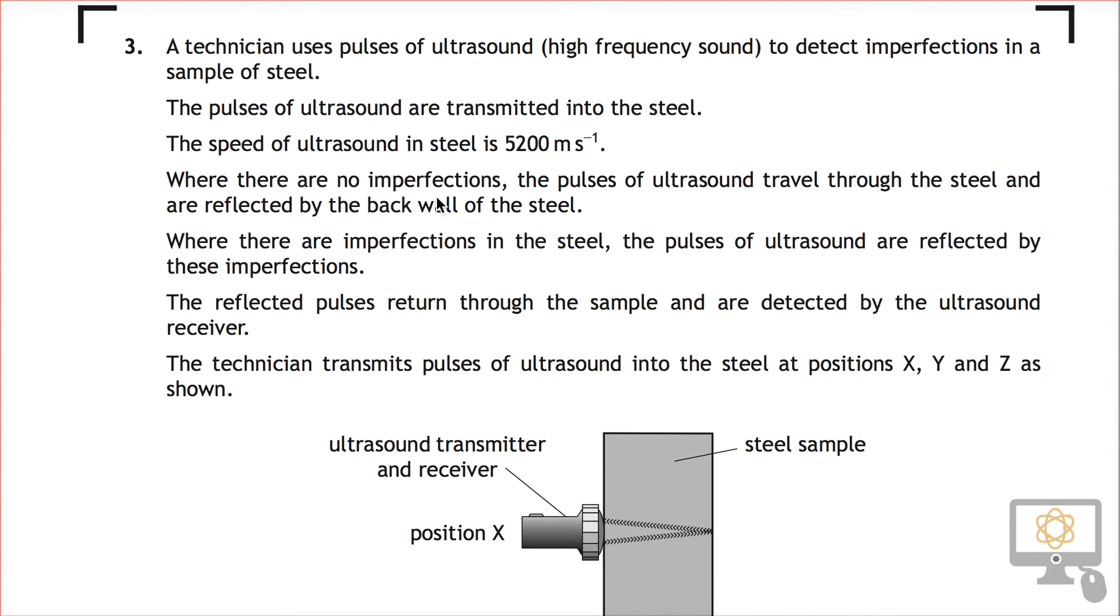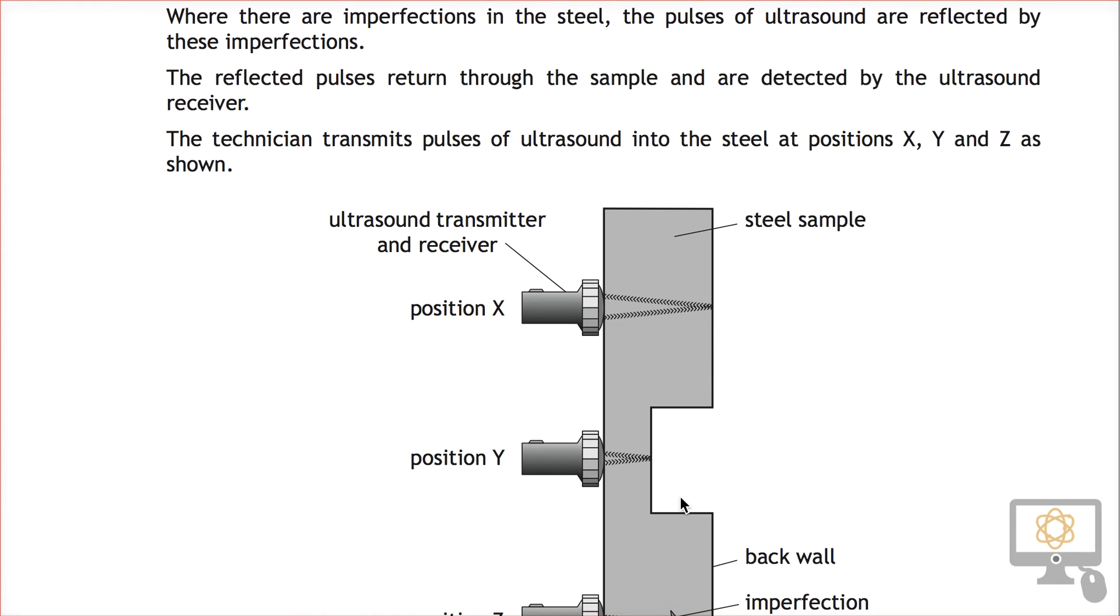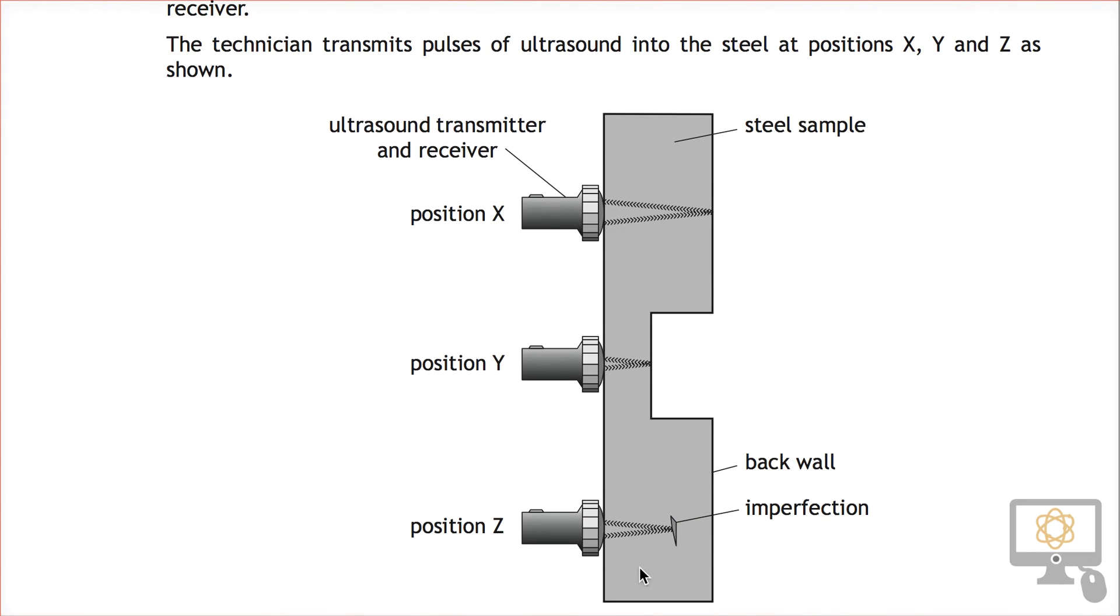Where there are no imperfections, the pulses travel through the steel and are reflected by the back wall, which is shown here at position X. Where there are imperfections, the pulses are reflected by these imperfections. If we look down, we can see at the bottom here an imperfection, and the ultrasound is reflected off that.